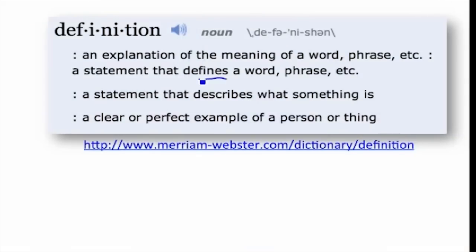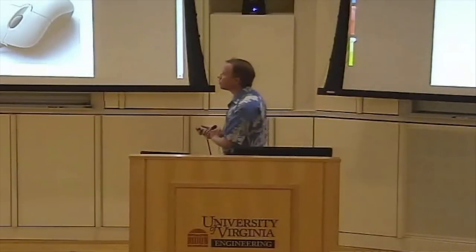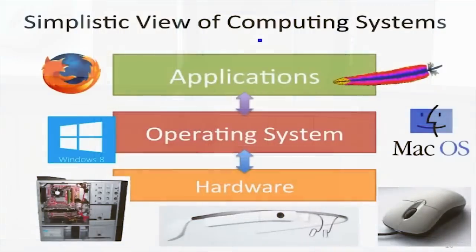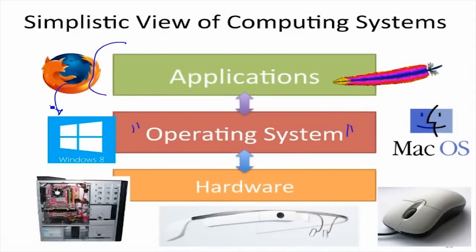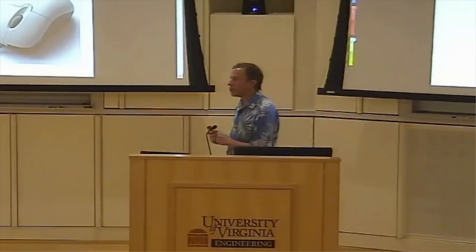Here's a way to view computer systems. It's a simplistic view, but probably the view most people have. At some high level you have applications — programs that users understand and can run. Below that you have an operating system, which is programs that these applications use. And below that you have some physical stuff. The operating system is the link between application programs and the physical hardware.